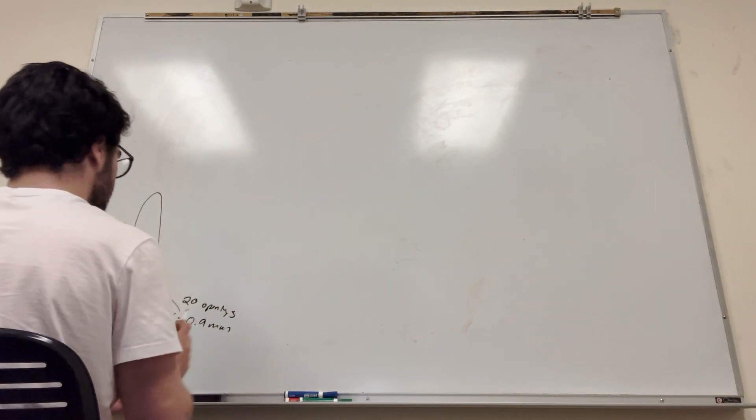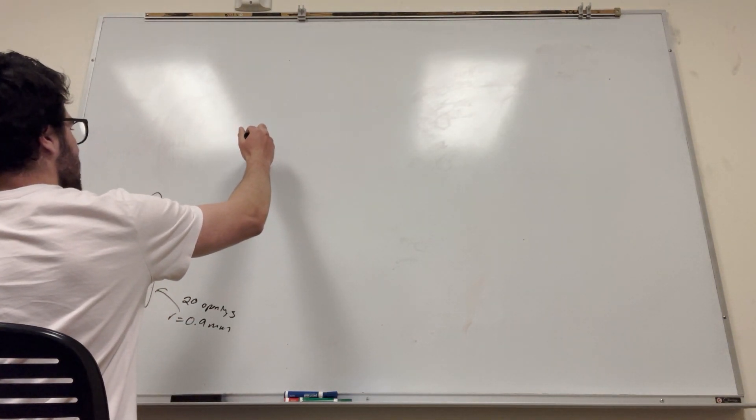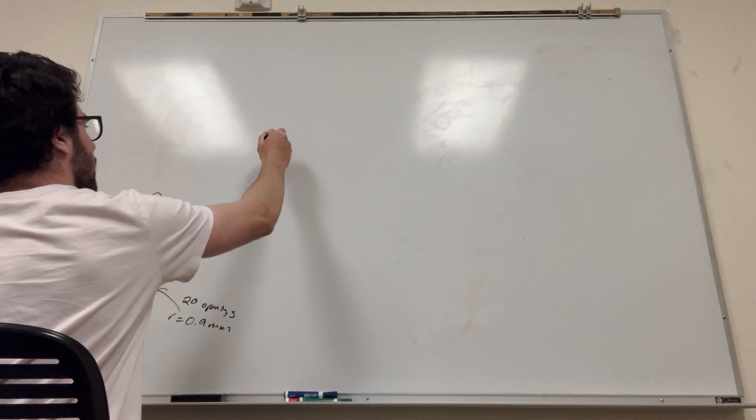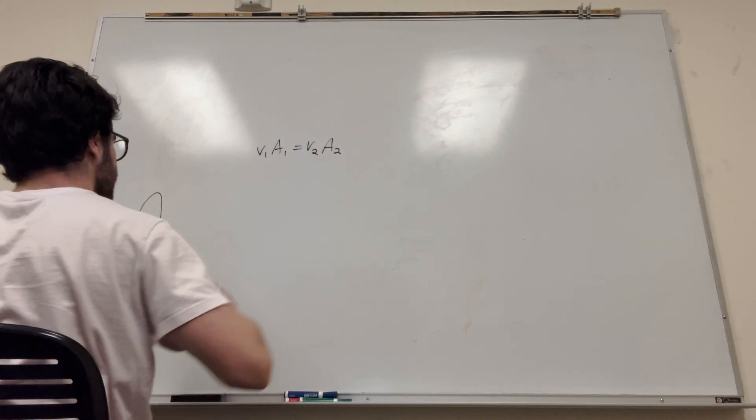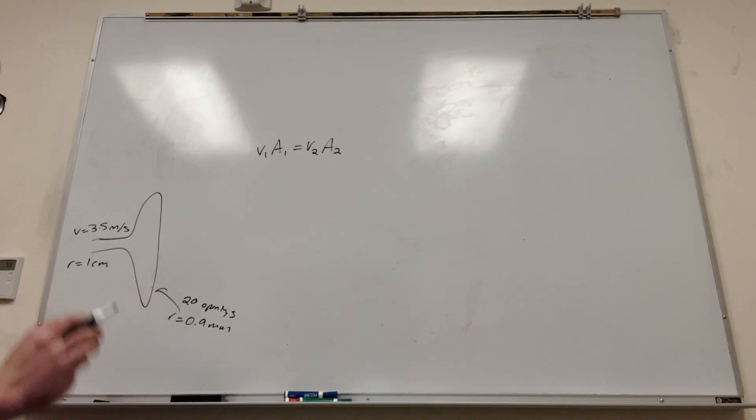So we know that the equation for this, velocity 1 times area 1 is the same as velocity 2, area 2. Okay, so what do we have here?